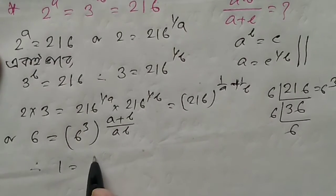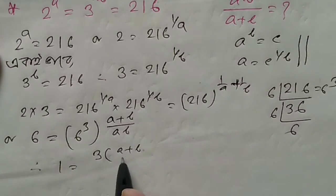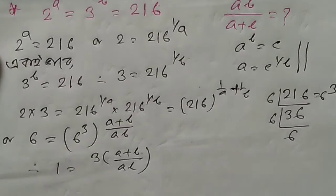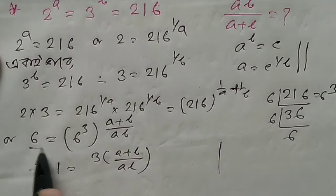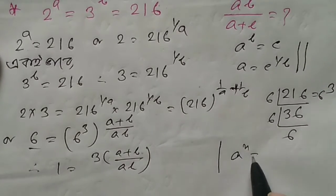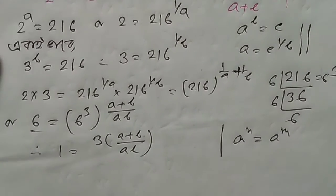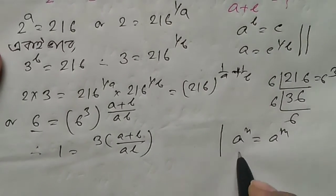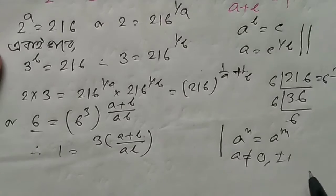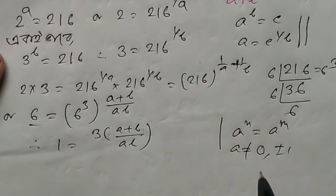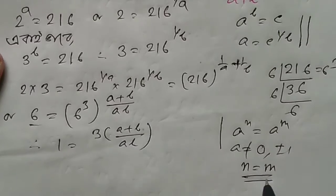This gives 6 to the power 1 equals 6 to the power 3 times (A plus B) by AB. Since both sides have the same base and the base is not equal to 0 or plus minus 1, the exponents must be equal: n equals m.